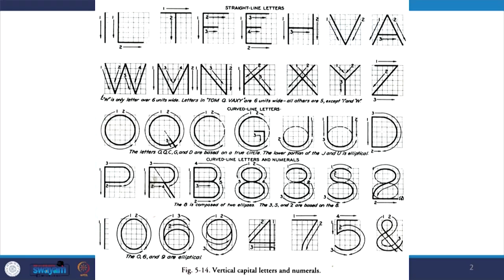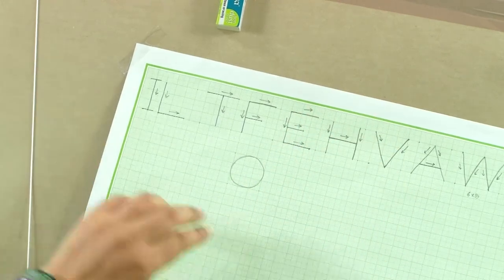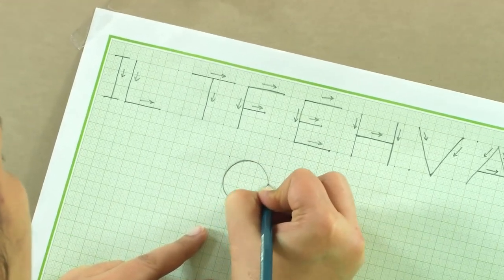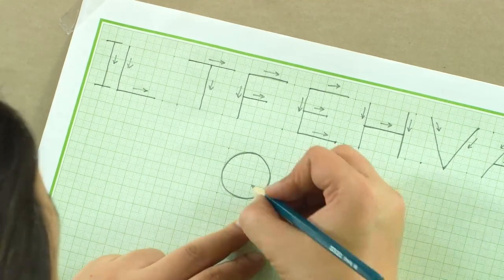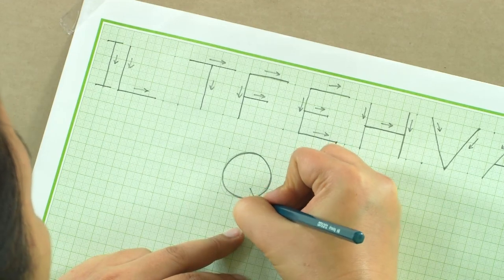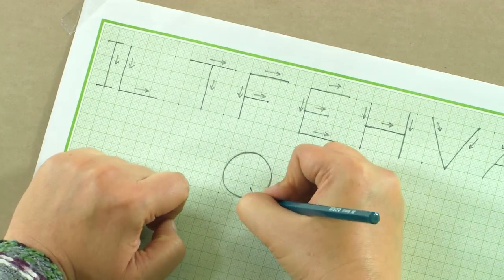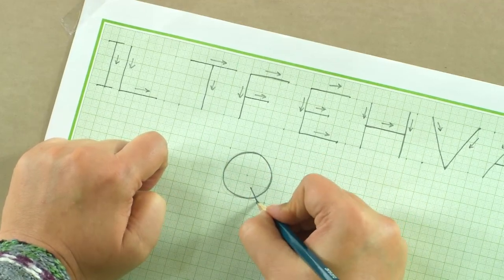Now we will move on to the curved ones. In this font, the curved letters are all perfect circles. If you look at O, you would actually be drawing it as a circle — it is 6 by 6. To make a Q, we make a line joining the center to a point 1 unit recessed — Q out of O. So O is just a circle, and Q is a circle with that line from center to a 1-unit recess.